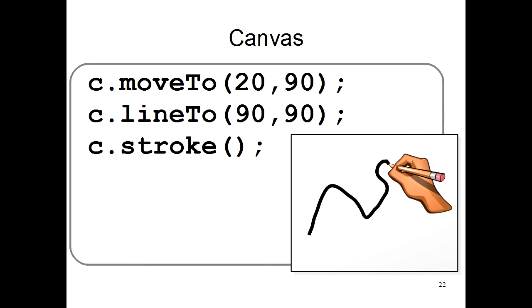Now imagine that the computer has a pen for drawing on this paper. To draw on the paper, you give commands to the computer about where to put the pen and where to move it on the paper.